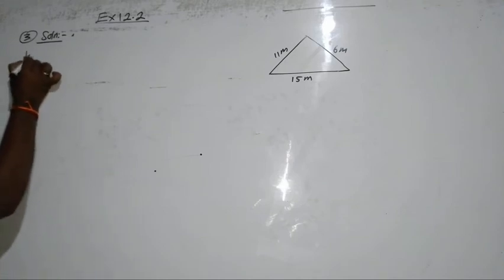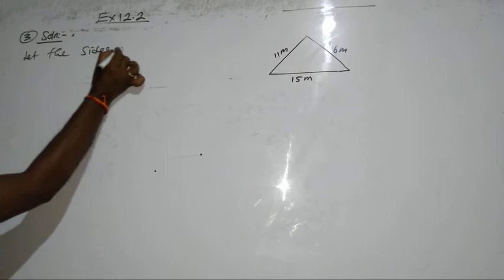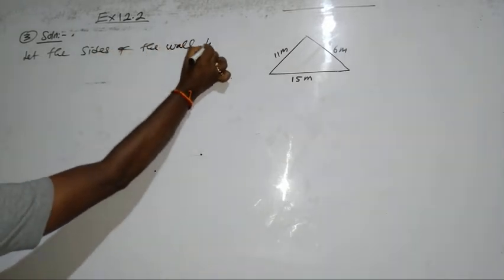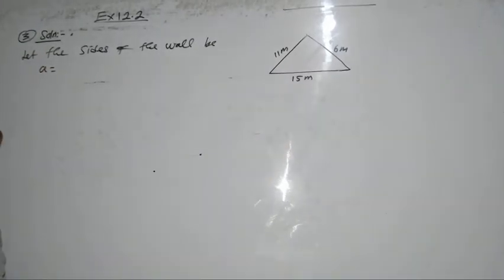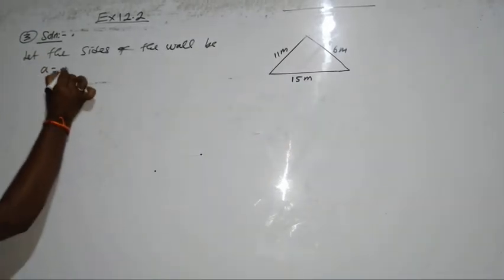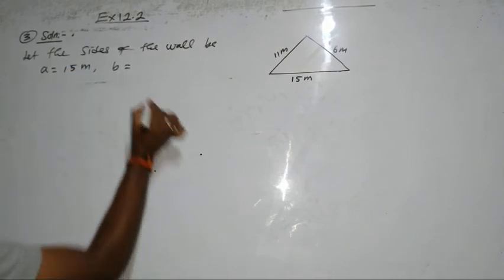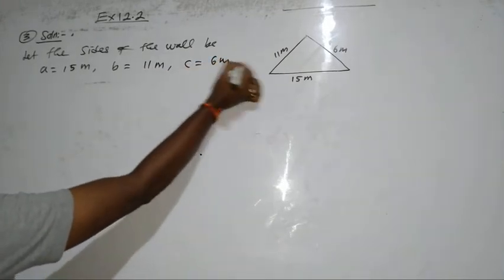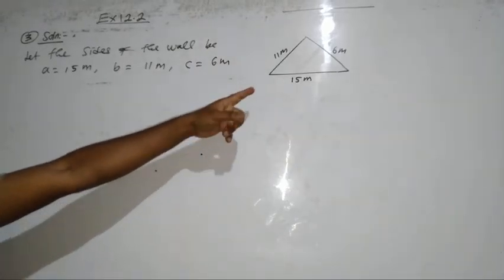Now, let the sides of the wall be: side A is 15 meter, B is 11 meter, and C is 6 meter. The diagram is given. Now you have to find the area painted in color. That means you have to find the area of this wall. This is a triangular wall.